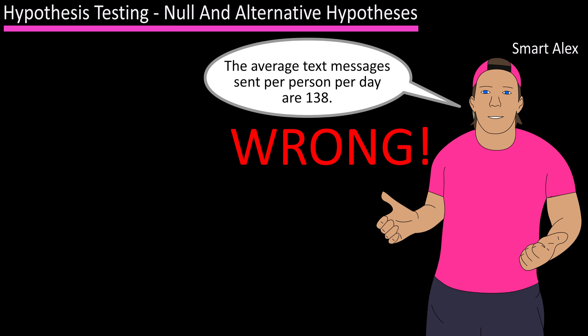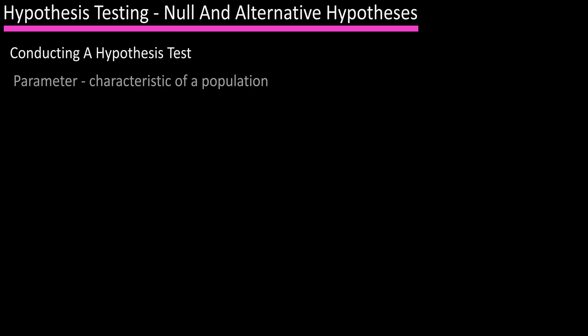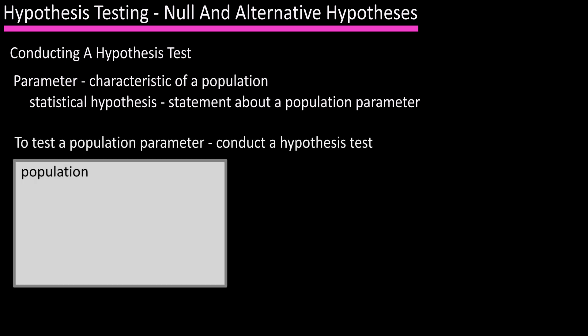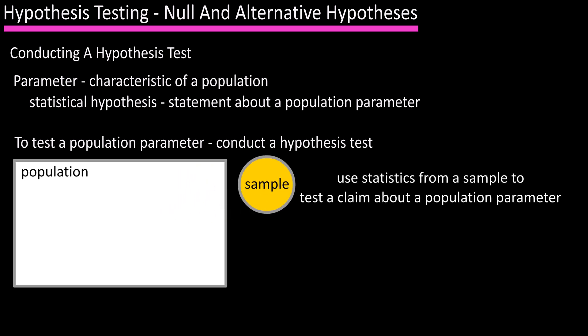One of the ways to do this is by conducting a hypothesis test. If you remember, a parameter is a characteristic of a population and a statement about a population parameter is called a statistical hypothesis. When we want to test a population parameter, we can do this through a hypothesis test by using sample statistics to test the claim about a value of a population parameter.